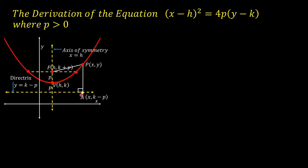Point A is a point on the directrix with coordinates (x, k − p). This is the axis of symmetry, with equation x = h. The directrix is p units away from the vertex, and the focus is also p units away from the vertex.